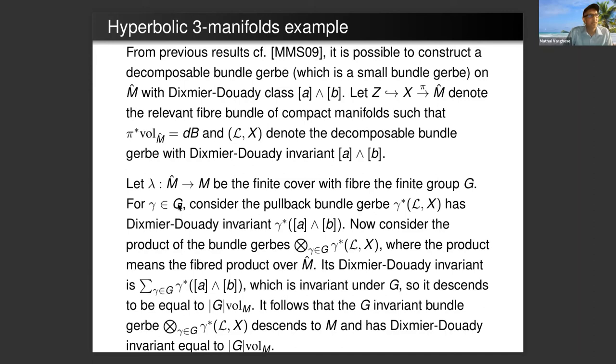There is a fiber bundle over M-hat with typical fiber Z, and the lift of the volume form of M-hat is exact on the total space X. Everything works nicely for M-hat, but M-hat is not the manifold we want to consider. We want to look at M. Let λ be the finite cover of M with fiber the finite group G. For each element γ in G, consider the pullback bundle. L_X is the bundle over M-hat, and this is the pullback bundle.